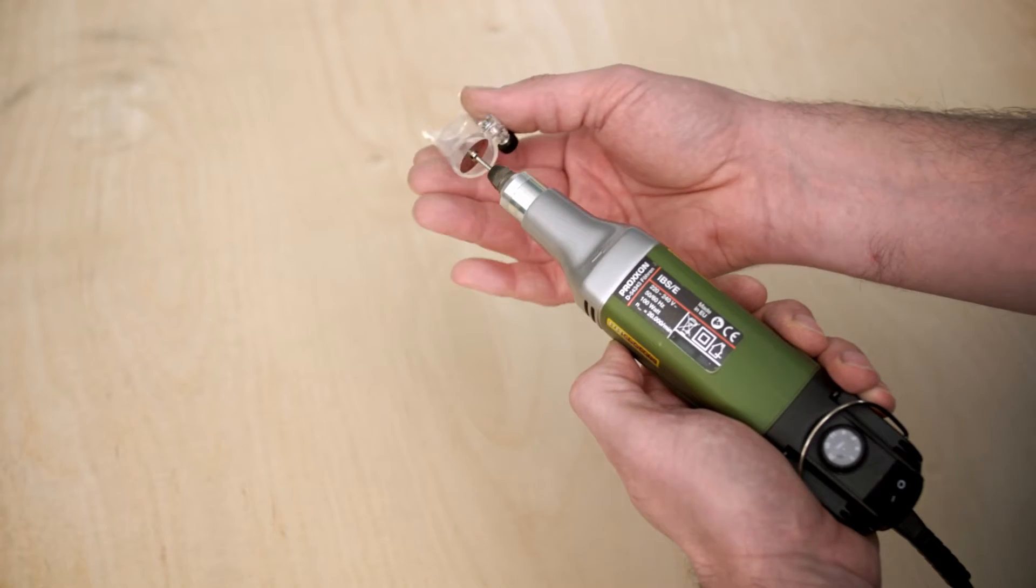Ideal for cutting, sawing or separating plastics, wood, non-ferrous metals or steels, especially wherever conventional electric power tools don't get very far. The protective device available as an option provides protection when working with saw blades.